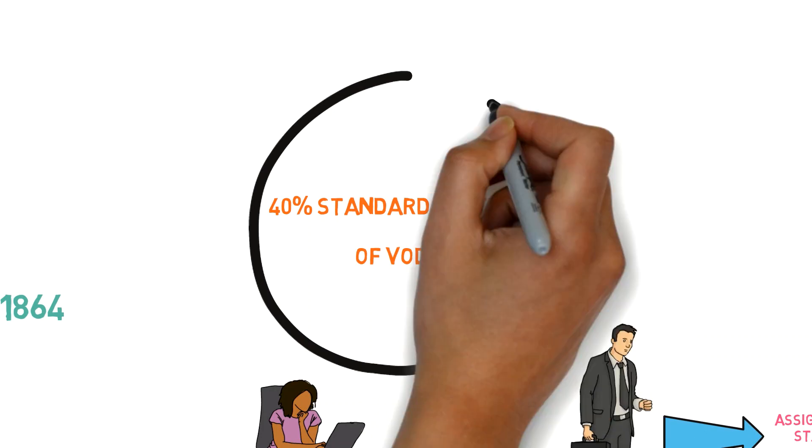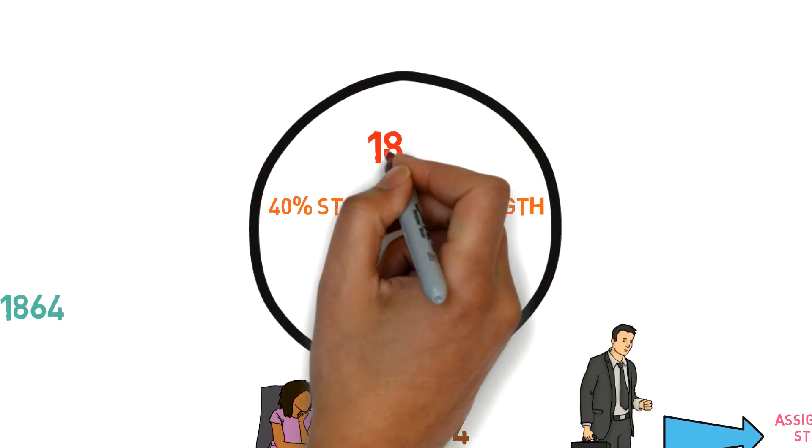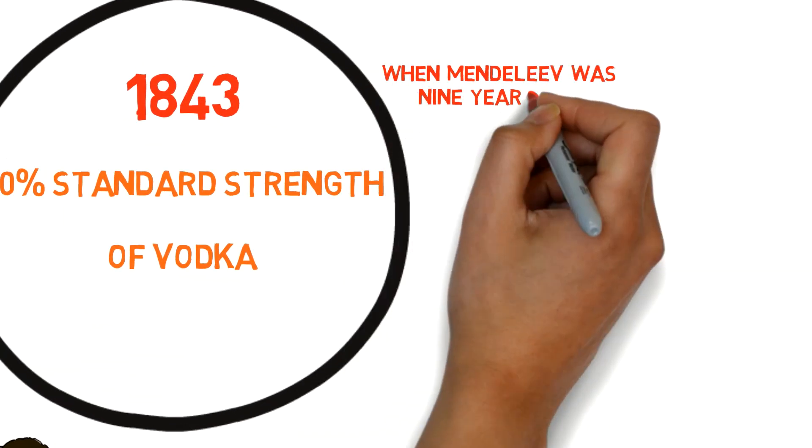Furthermore, the 40 percent standard strength was already introduced by the Russian government in 1843 when Mendeleev was nine years old.